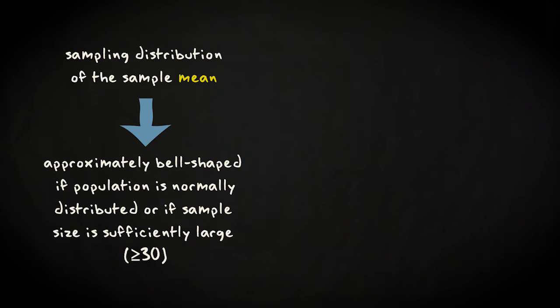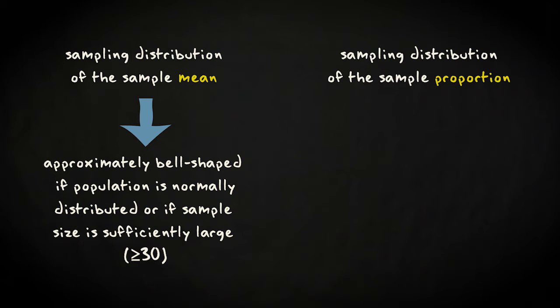In the case of the sampling distribution of the sample mean, the distribution is approximately bell-shaped if the population itself is normally distributed, or if the sample size is sufficiently large — usually 30 is taken as a minimum. In the case of the sampling distribution of the sample proportion, you can only be sure that the distribution is bell-shaped if you have at least 15 positive cases and 15 negative cases — so at least 15 hipsters and 15 non-hipsters.